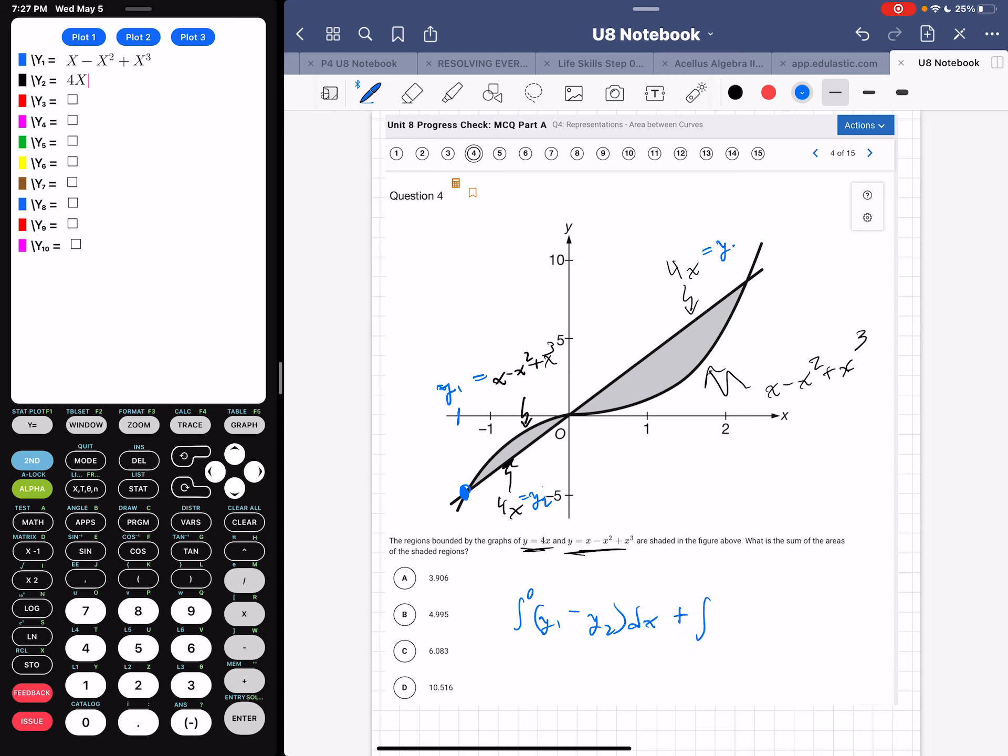Remember, this one is y sub 2. I have to write everything because if I don't, I make dumb mistakes. Minus y sub 1. Then we have our dx. Alright, so this one is going to be zero to something. Oh, we need to find that point of intersection also.